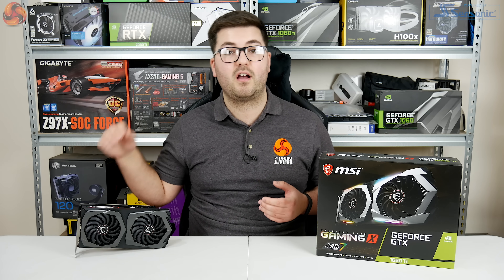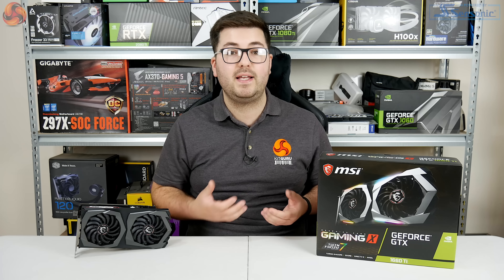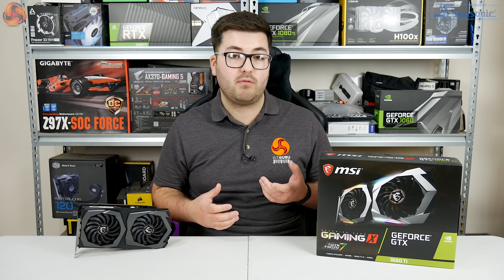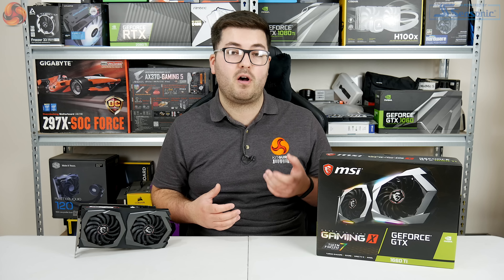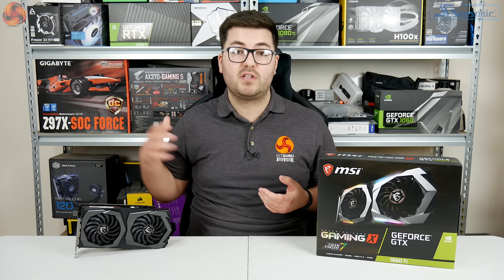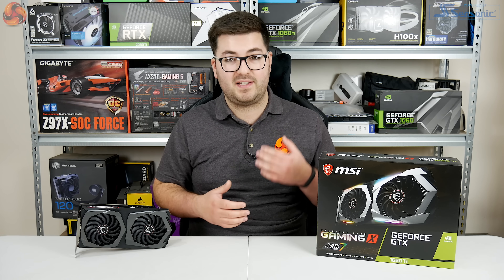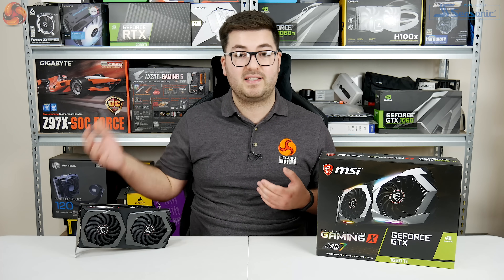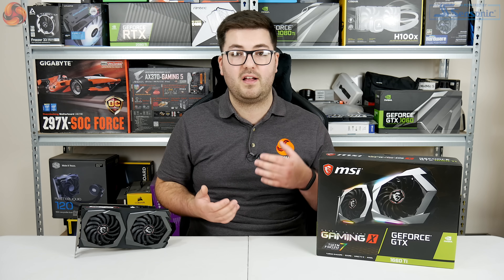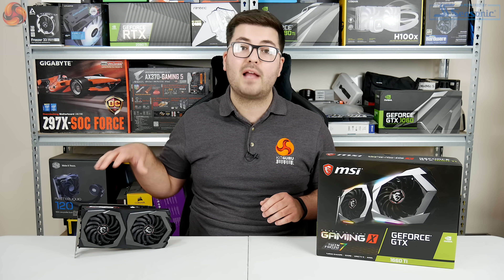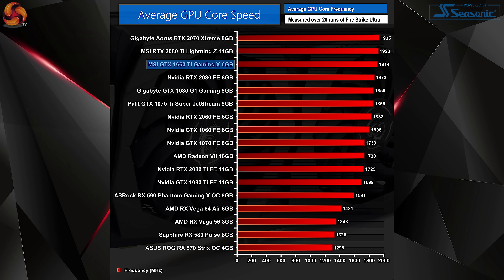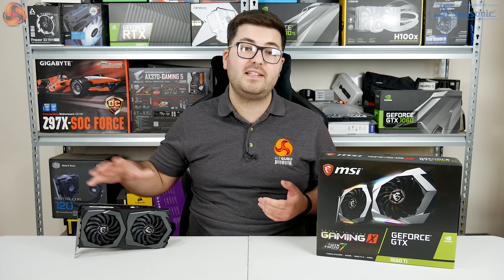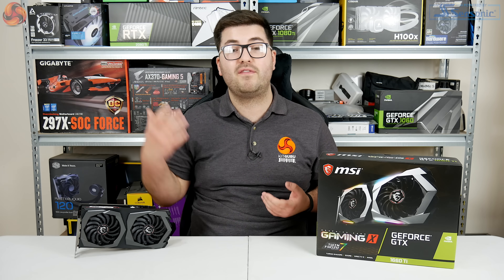It's also worth looking at this card's average operating frequency, measured across 20 runs of 3DMark Fire Strike Ultra. Despite the rated boost clock of 1875 MHz — already 105 MHz faster than reference — we actually saw this card average 1914 MHz in practice, a good 30 MHz faster than the advertised boost clock.